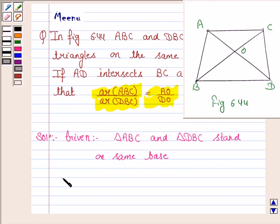And what we have to prove, we have to prove that the area of triangle ABC upon area of triangle DBC is equal to AO upon DO.